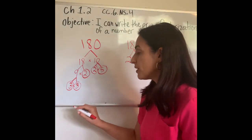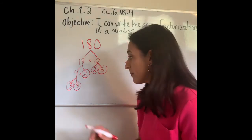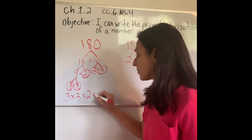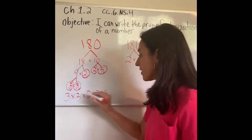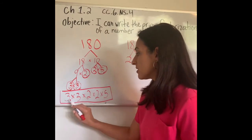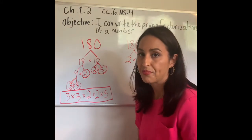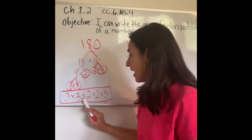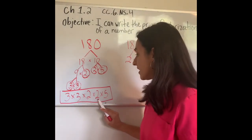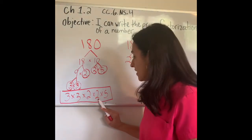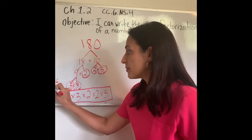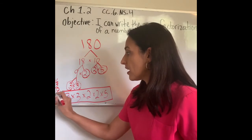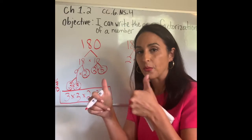All the numbers that I circled I'm going to rewrite and square off, then double check my work to make sure it equals 180. Three times three, check. Times two, check. Times two, check. Times five, check. Let's verify: 3 times 3 is 9; 9 times 2 is 18; 18 times 2 is 36; 36 times 5 — 5 times 6 is 30, 5 times 3 is 15 plus 3 is 18 — that's 180. And that's what I have. 180. Way to go, we did it!